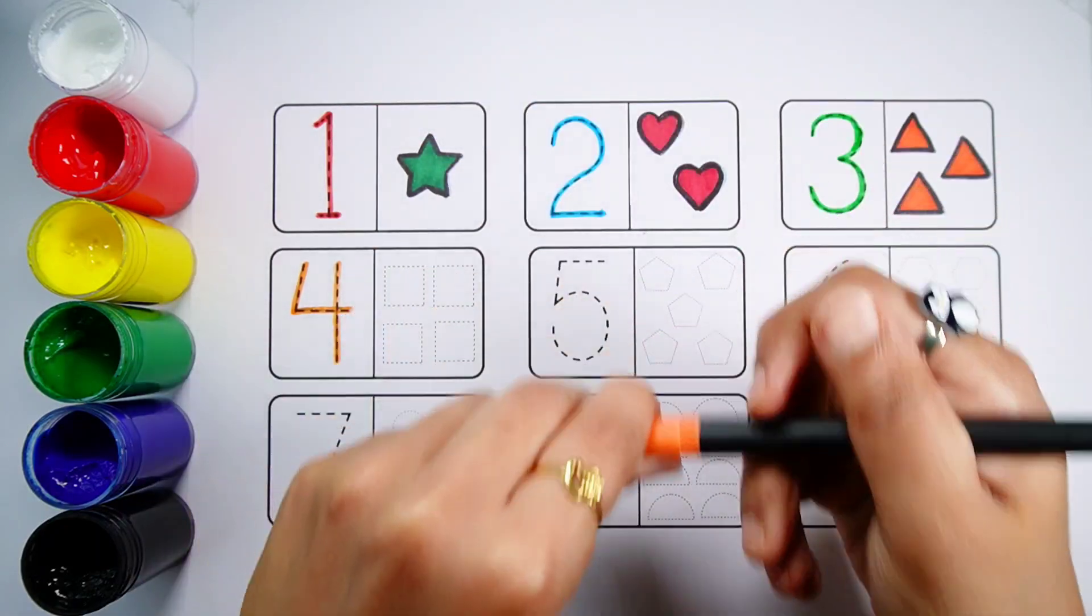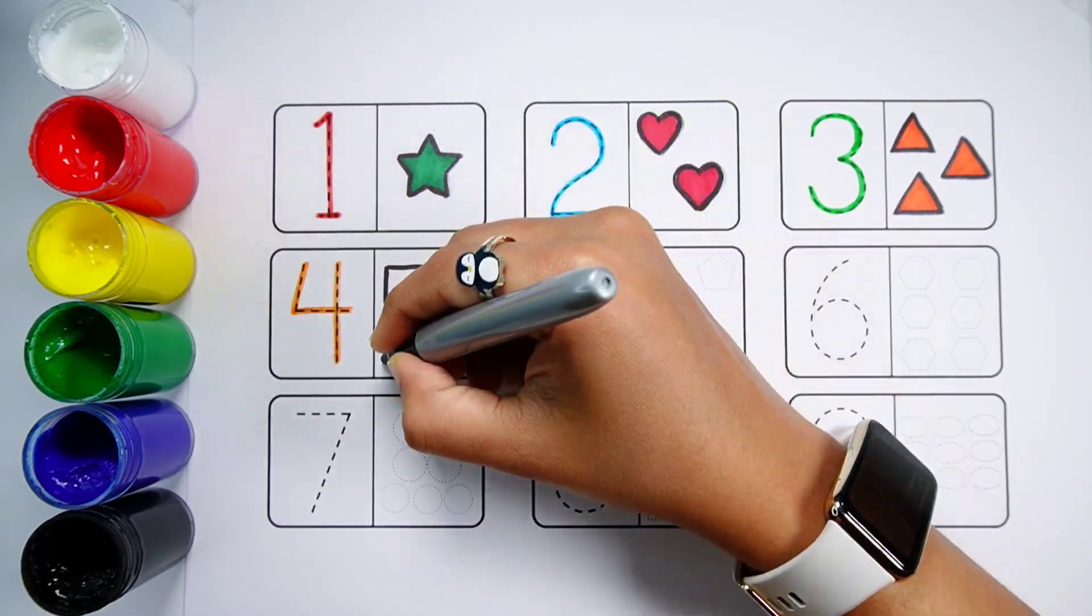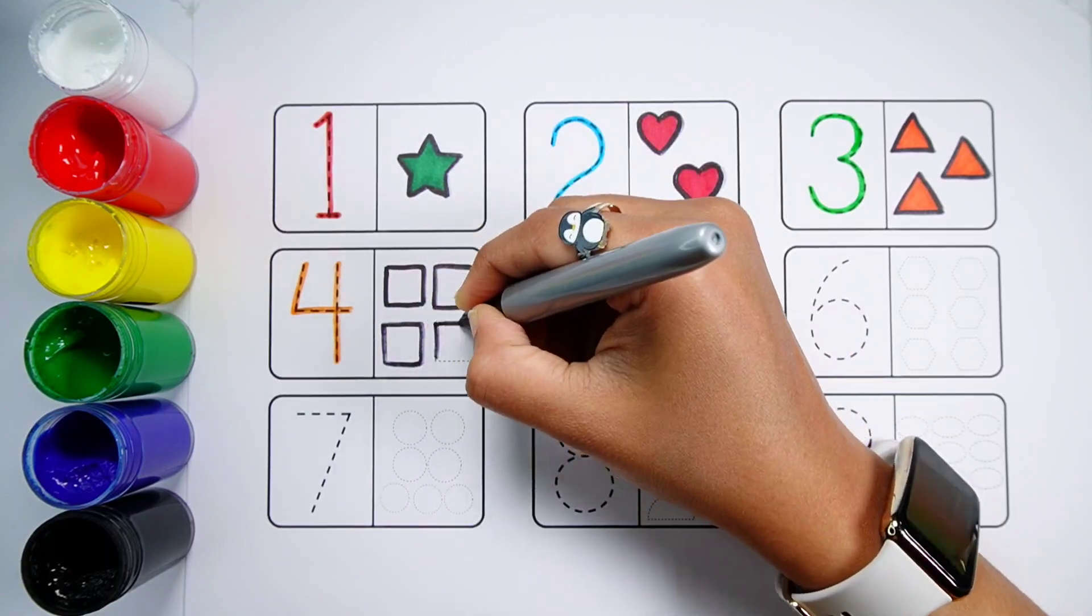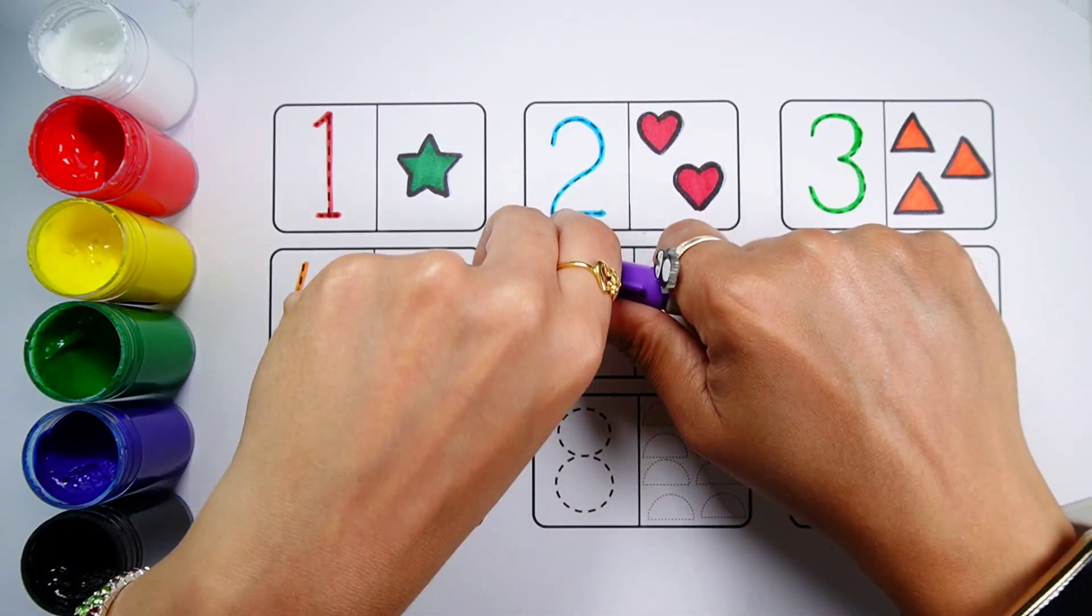Number 4. One, two, three, four. Four squares. Violet color.